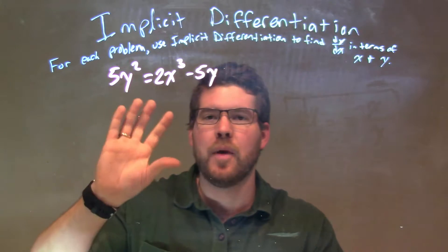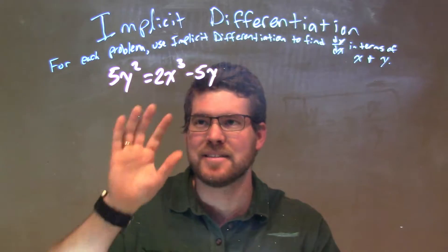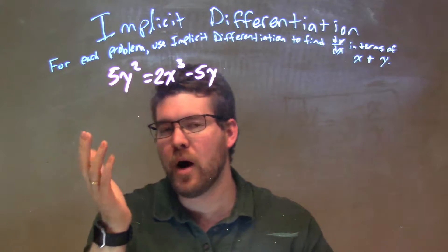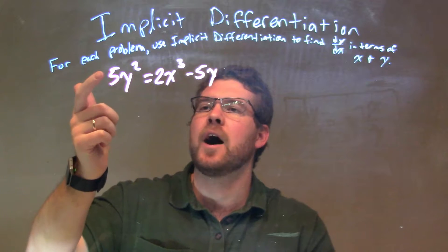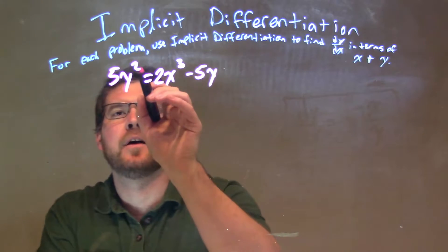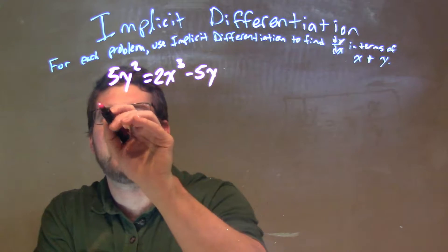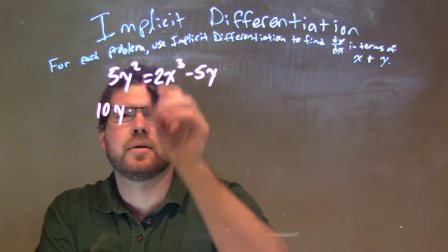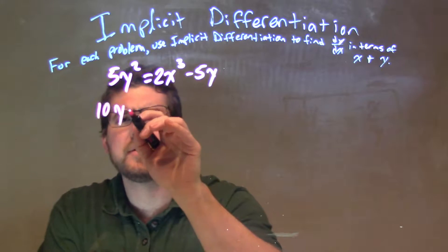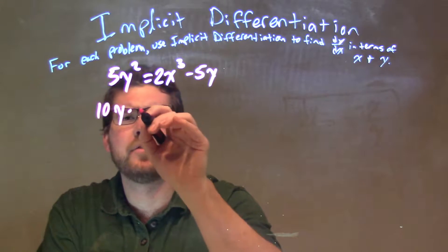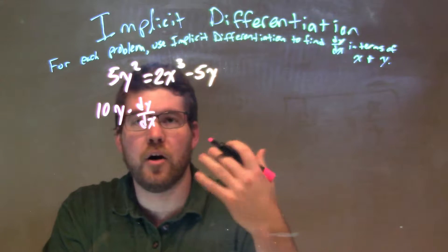I want to take the derivative here, and I'm going to treat basically every variable like it's an x, except for the y's — the y's will have one extra step. So 5y squared: the power rule says 5 times 2, 2 comes down, we have 10y, reduce the exponent by 1 — 2 minus 1 is 1 — times dy/dx, the derivative of y.